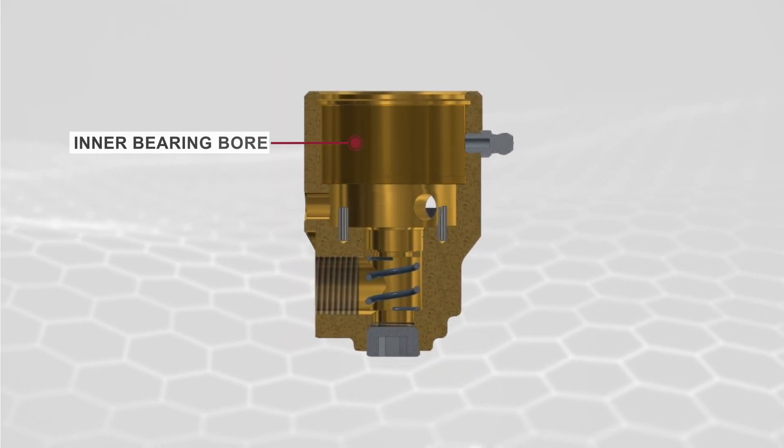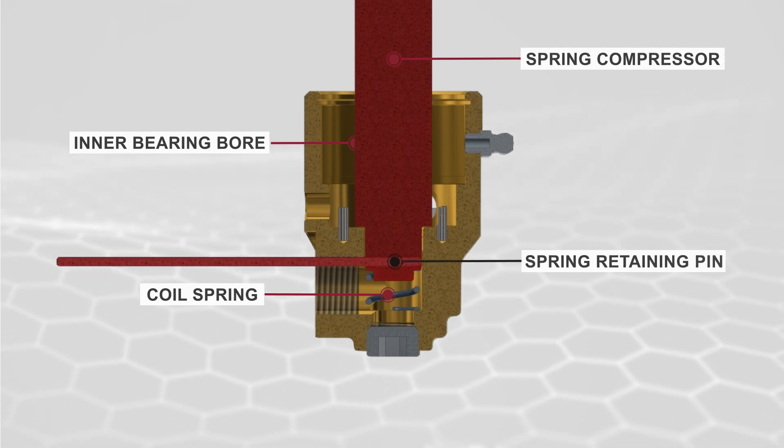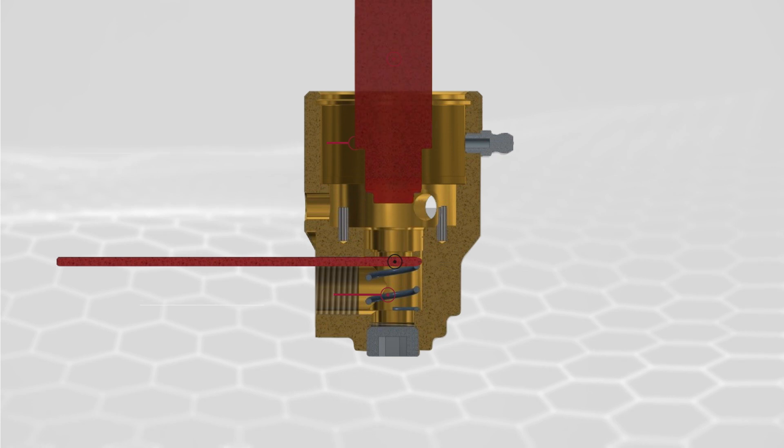Grease the housing bearing bore, and insert the coil spring with the spring compressor until the spring retaining pin can be inserted through the entrance port. Remove the spring compressor.